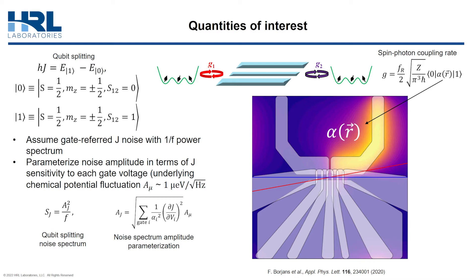And lastly, we want to know the magnitude of the spin-photon coupling rate G, which depends both on the resonator impedance Z as well as the resonator gate's lever arm operator alpha, which basically indicates a gate's degree of influence on the chemical potential in the quantum well underneath the gate. In this figure, alpha is plotted as a function of position for the upper right gate, which is the resonator gate in this geometry.